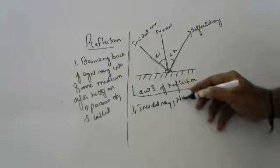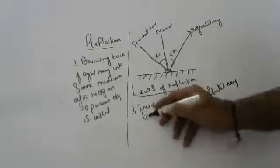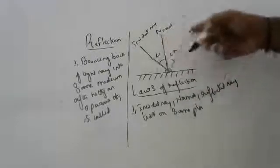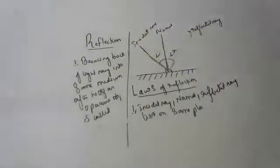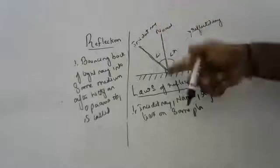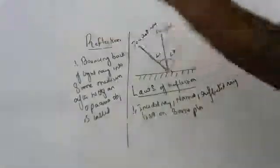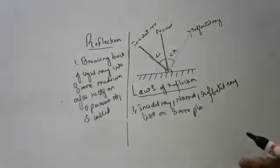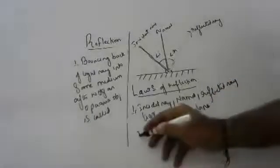Now, the first law of reflection: the incident ray, the normal, and the reflected ray all lie on the same plane. If you hit a ball at the wall, it comes back to your hand — it does not go to the floor. Similarly, the incident ray, normal, and reflected ray all lie in the same plane.